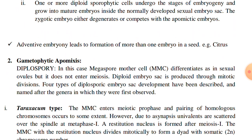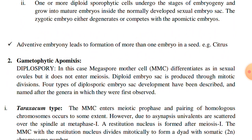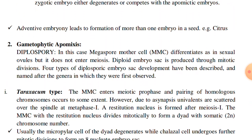Now, gametophytic apomyxis. In this category there are two subcategories: diplospory and apospory. In diplospory, the megaspore mother cell differentiates as in sexual ovules but it does not enter into meiosis. That is, the megaspore mother cell itself behaves as the megaspore.